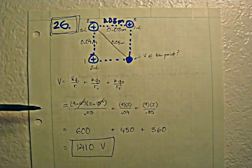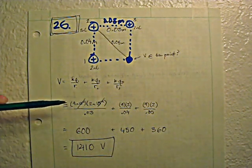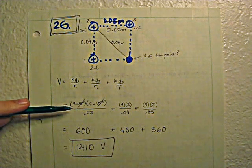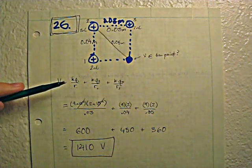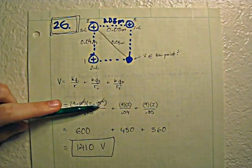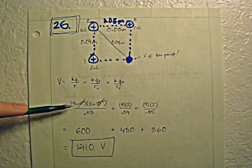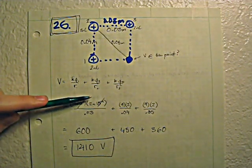And what you can do is, since it's nanocoulombs and K is 10 to the 9th, the 10 to the negative 9th and 10 to the 9th cancel out and you just get 9 times 2, which is 18 on top.